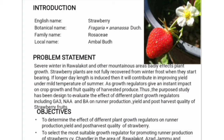Now I will share some information about the problem statement. Severe winters in Rawalakot badly affect plant growth. If longer day length is induced, it can contribute to improving yield under mild temperatures of summer. Plant growth regulators give an instant impact on crop growth and fruit quality of harvested produce. Thus, the proposed study has been designed to evaluate the effect of different growth regulators including gibberellic acid, naphthalene acetic acid, and benzyl adenine on runner production, yield and post-harvest quality of strawberry fruit.